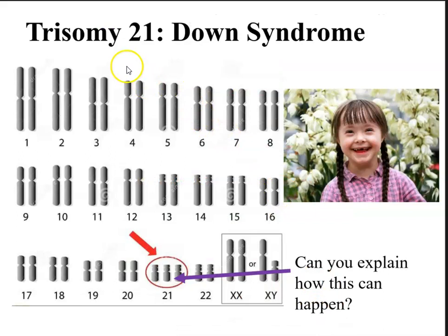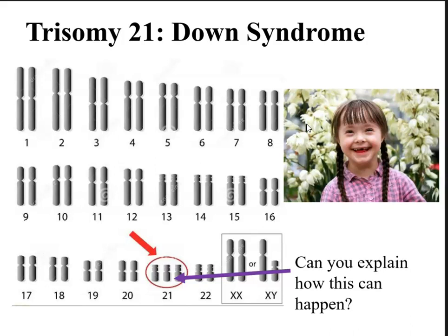We talked about trisomy 21, also known as Down syndrome, where there is an extra chromosome at location 21. This causes the symptoms of Down syndrome — you can see the specific facial features of a patient with Down syndrome. There may or may not be a level of mental retardation, and depending on the severity of the condition, they may or may not be functional. Can you explain how this can happen? This is something you should definitely review in your notes.